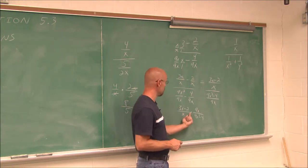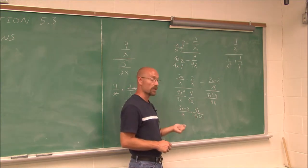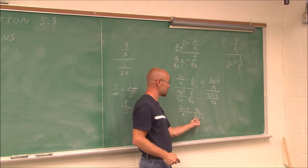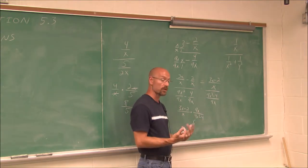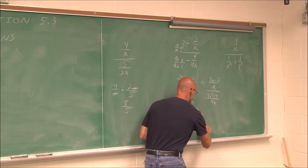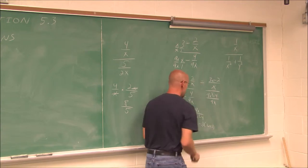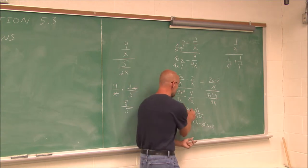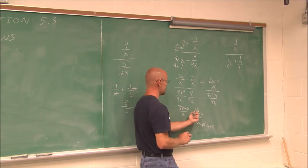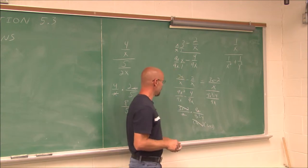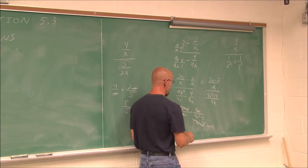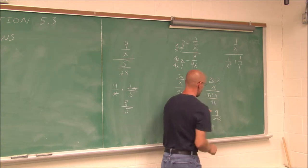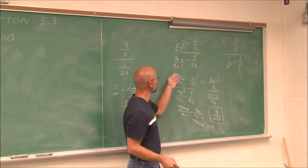Recall from the previous section that when we multiply rational expressions, we always want to factor and reduce. The expression 9x² minus 4 is a difference of squares — 9x² is (3x)² and 4 is 2² — so it factors to (3x minus 2)(3x plus 2). Now we can reduce: the factor (3x minus 2) cancels with (3x minus 2), and the x's cancel. The only factor left on top is 9, and on the bottom is (3x plus 2). So the simplified expression is 9 over (3x plus 2).